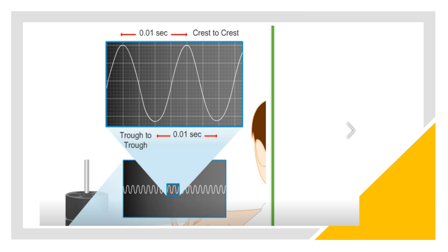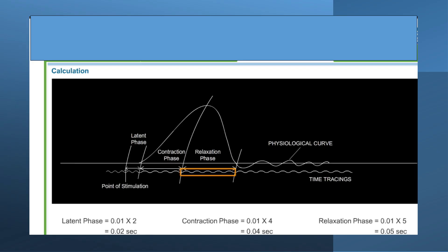Why are we taking this time tracing? We want to calculate the duration of all the phases. We count the crests in each phase. For example, in the latent phase we can see 2 crests, and since 1 crest equals 0.01 second, the duration of the latent phase is 0.02 second. In the contraction phase we can see 4 crests, so the duration of contraction is 0.04 second. In the relaxation phase we are getting 5 crests, so it is 0.01 × 5 = 0.05 seconds.